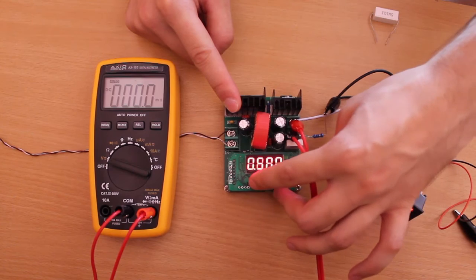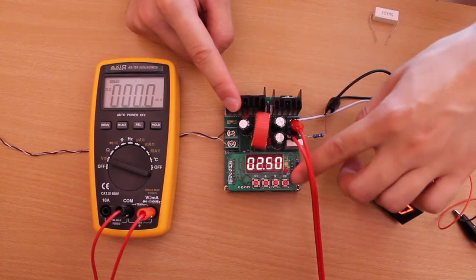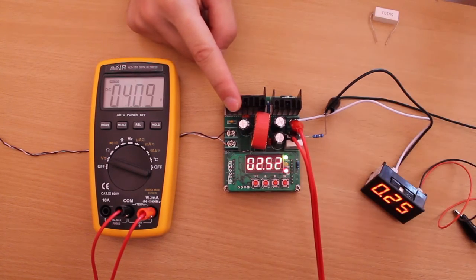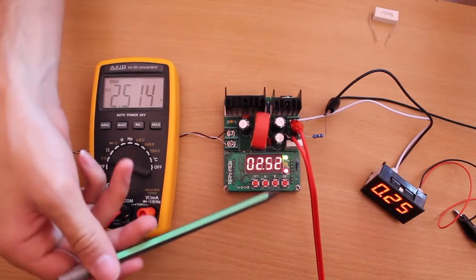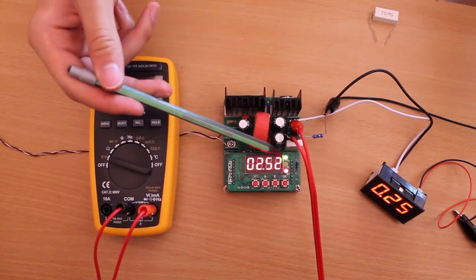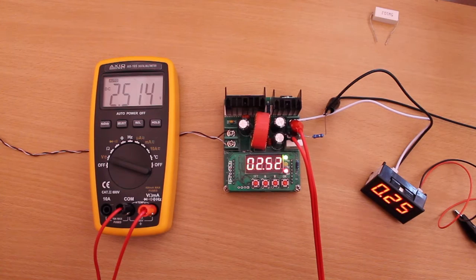Press SET again. Press OK to output. As you can see by the red LED and the green LED shows that we're in constant voltage mode.